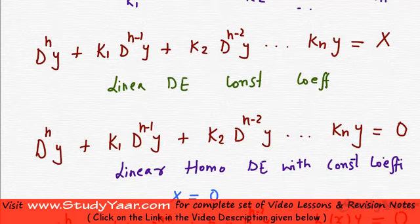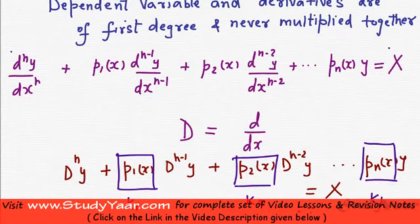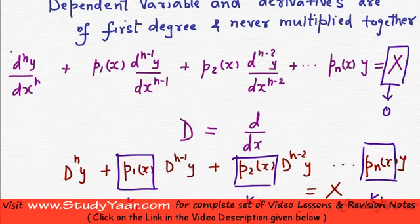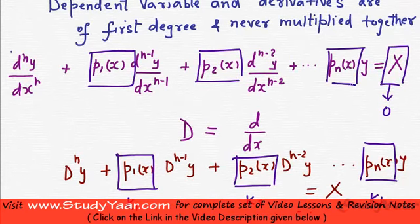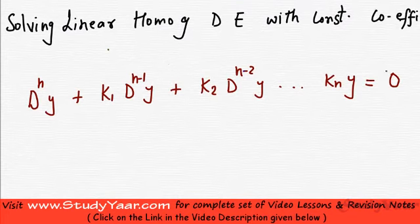So we have basically seen three types of linear differential equations. One is where the right-hand side function of x is 0, known as a homogeneous linear differential equation. The second is where all the coefficient functions are each equal to some constants, known as a linear DE with constant coefficients. The third variety is where both the coefficients are constants and the right-hand side is 0, known as a homogeneous linear DE with constant coefficients. Now let's learn how to solve this third type.